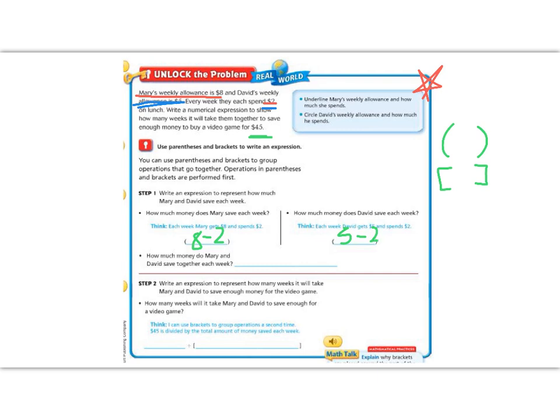How much money do Mary and David save each week? So let's go ahead and solve these. 8 minus 2 gives me 6, and 5 minus 2 gives me 3. So if they each save together, they have 6 plus 3.